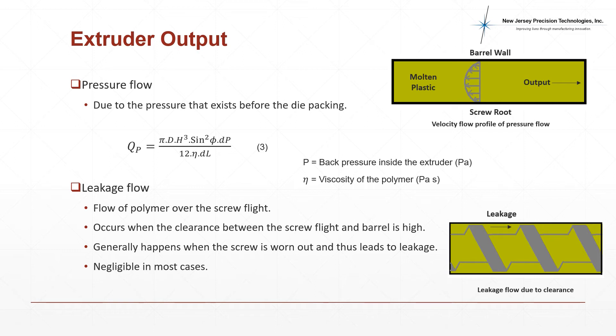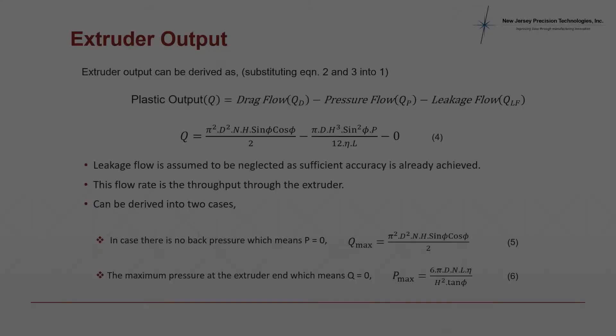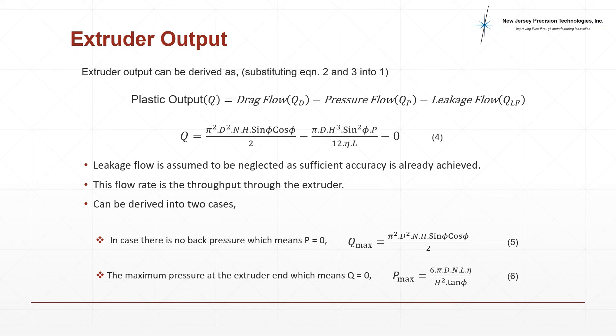Finally, the leakage flow is the possibility of leakage over the screw flight in cases where there is high clearance between the screw flight and the barrel. This usually happens when the screw has worn out due to long periods of use. Hence, this value can be neglected in the majority of cases. Substituting these equations into equation 1, we get the equation for the total plastic extruder throughput as equation 4, assuming leakage flow is really small and can be neglected.